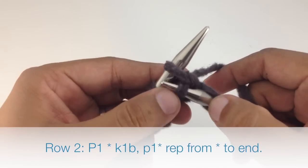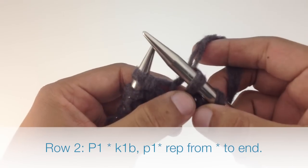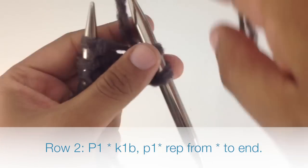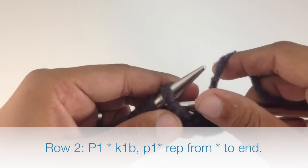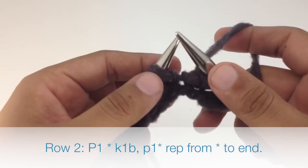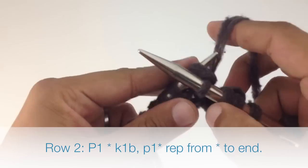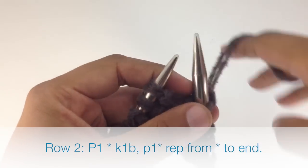Drop both stitches off of your needle. Then finish the repeat by purling one. Continue knitting one below and purling one until you reach the end of the row.